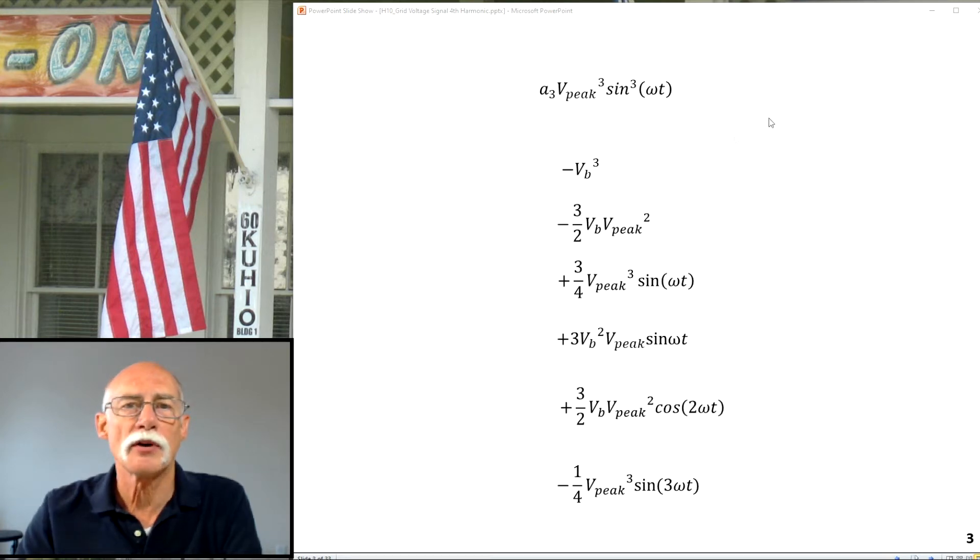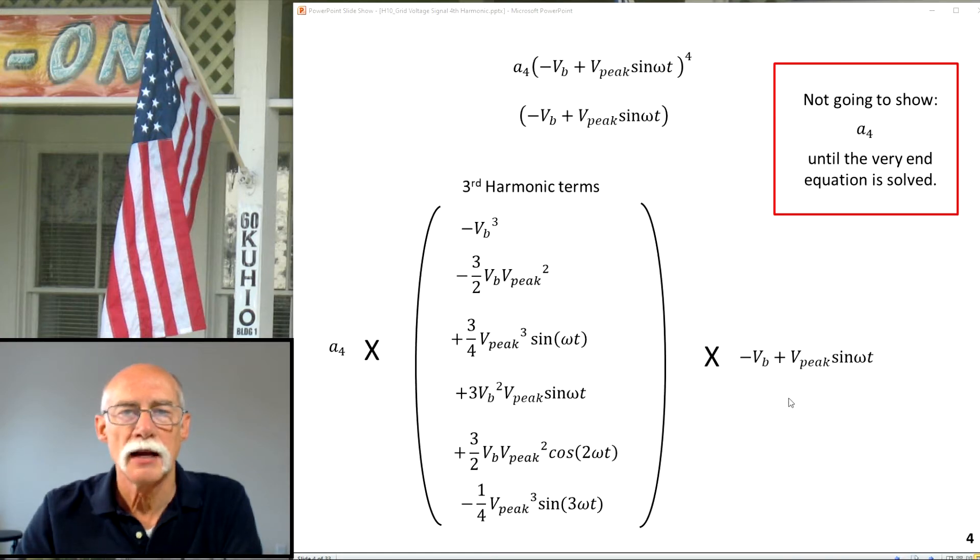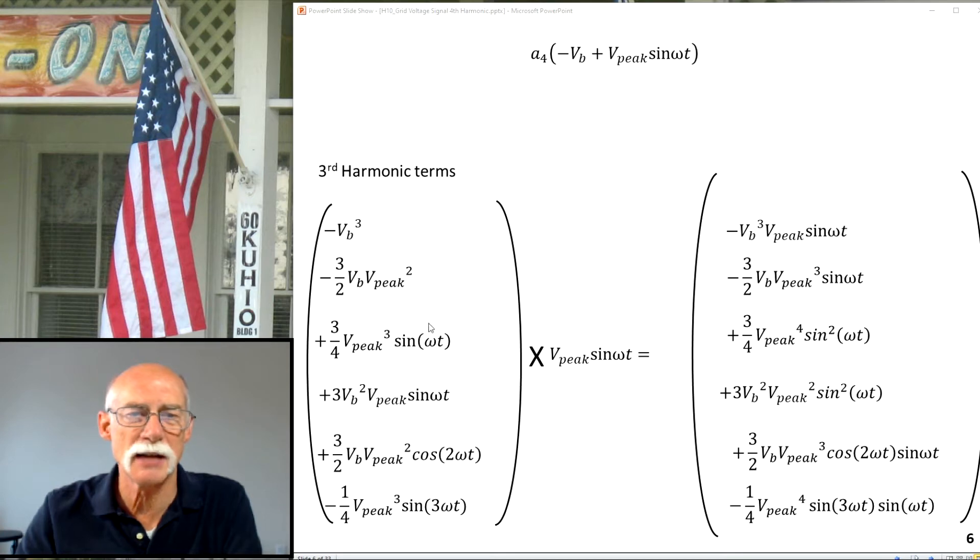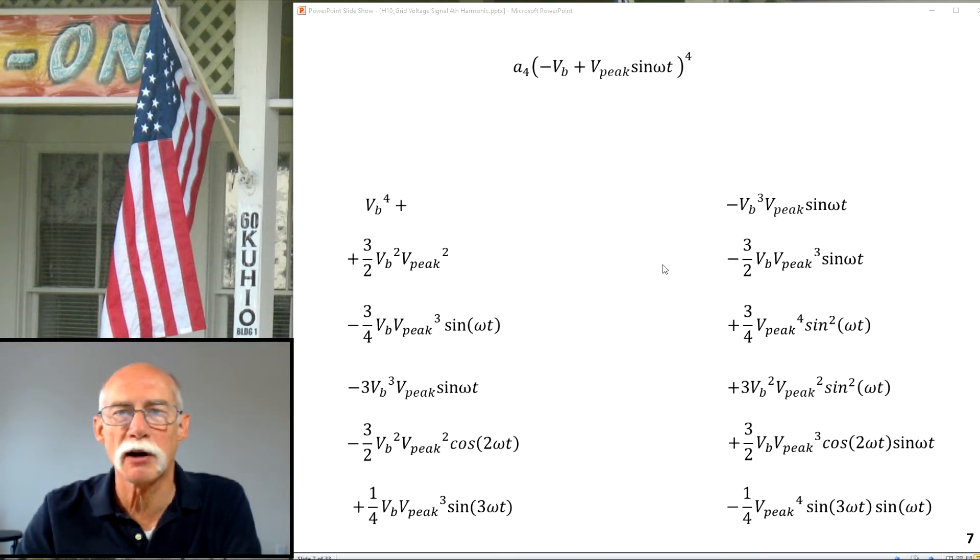From the third order harmonic, this is the terms that we have. These are the terms we have. So only thing I have to do is take one more step. So I'm my fourth order harmonic term. So I break it down by pieces. Third times the first part plus the same terms times the second part to give me both parts.